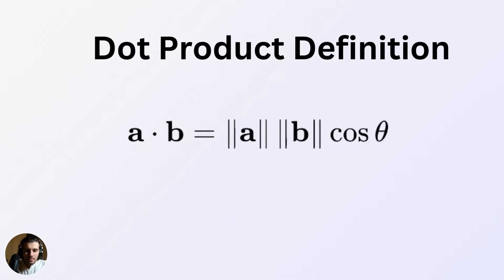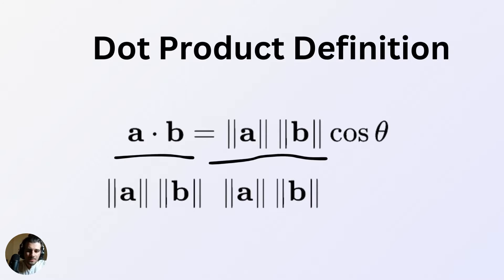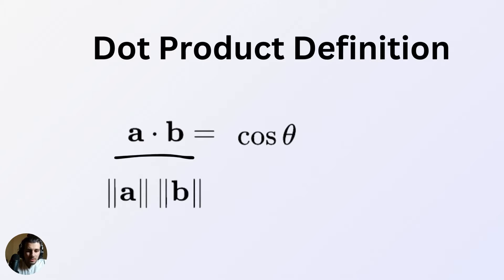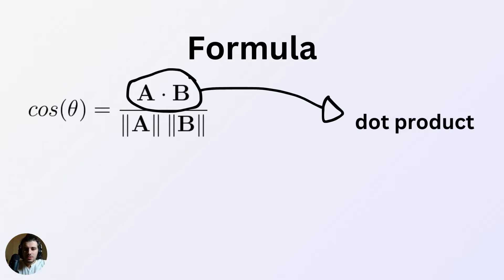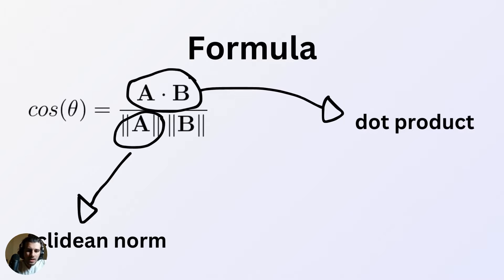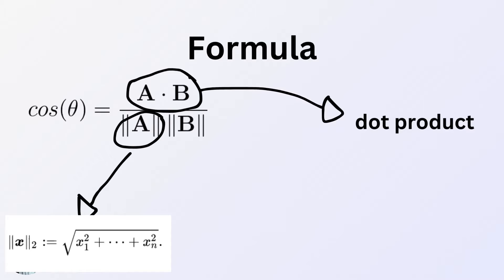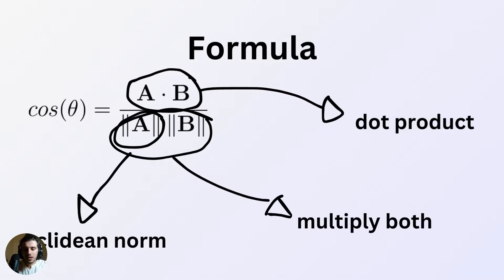Let's look at how we get this formula. If you know a bit of linear algebra, it comes directly from the dot product definition. The dot product definition is: the magnitude of A times the magnitude of B times the cosine of the angle between A and B. So we just divide both sides by the magnitudes multiplied together and we get the cosine similarity formula. The dot product is simply each element of A and B multiplied together and summed up. The magnitude is also called the Euclidean norm — you square each element of A, sum them up, and take the square root. Those are two scalars, and that's it.